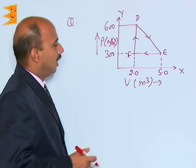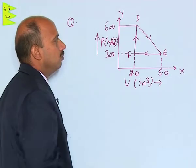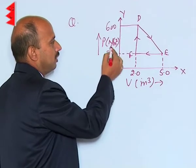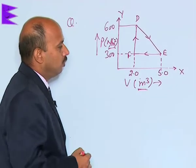Now see here, this question has a PV graph given to you - the graph between pressure and volume. The pressure is in Newton per meter square and volume is in meter cube.